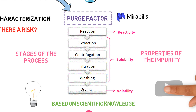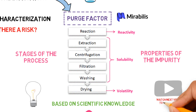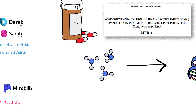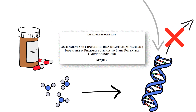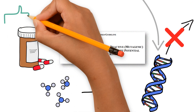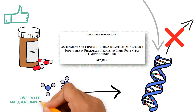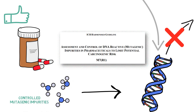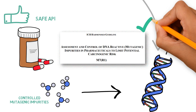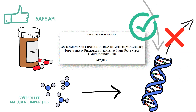In our next video, we will show an example of how to calculate the purge factor. Finally, once the best control strategy has been defined, the mutagenic impurities are controlled, the API is considered to be safe, and compliance to ICH M7 is established.